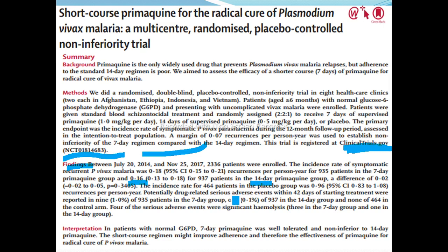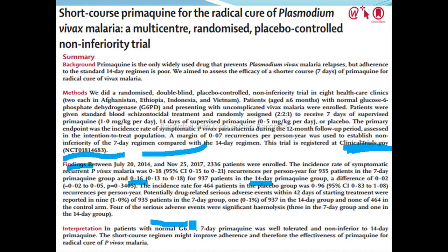Potentially drug-related serious adverse events within 42 days of starting treatment were reported in 9 of 935 patients in the 7-day group, 1 of 937 in the 14-day group, and 9 of 464 in the control arm. Four of the serious adverse events were significant hemolysis, including acute intravascular hemolytic syndrome in patients with normal G6PD in the seven-day group.